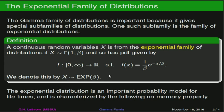The exponential distribution is important because it is most likely a model for the lifetimes of certain equipment. Light bulbs, or anything that will eventually fail, can usually be modeled with an exponential distribution. Another important property of the exponential distribution is that it has no memory, so let's take a look at what that actually means.